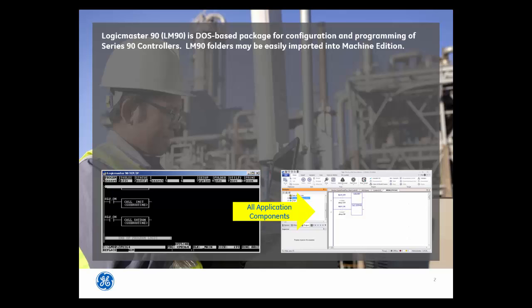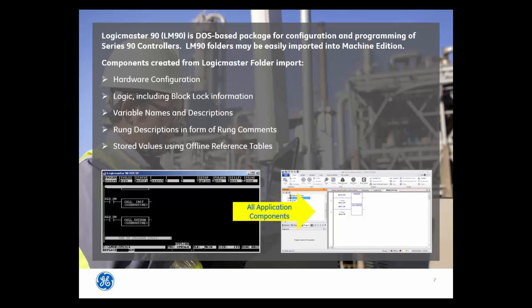LM90 folders may be easily imported into Machine Edition. The components created from a Logic Master folder import include hardware configuration, logic including block lock information, variable names and descriptions, rung descriptions in the form of rung comments, and stored values using the offline reference tables.